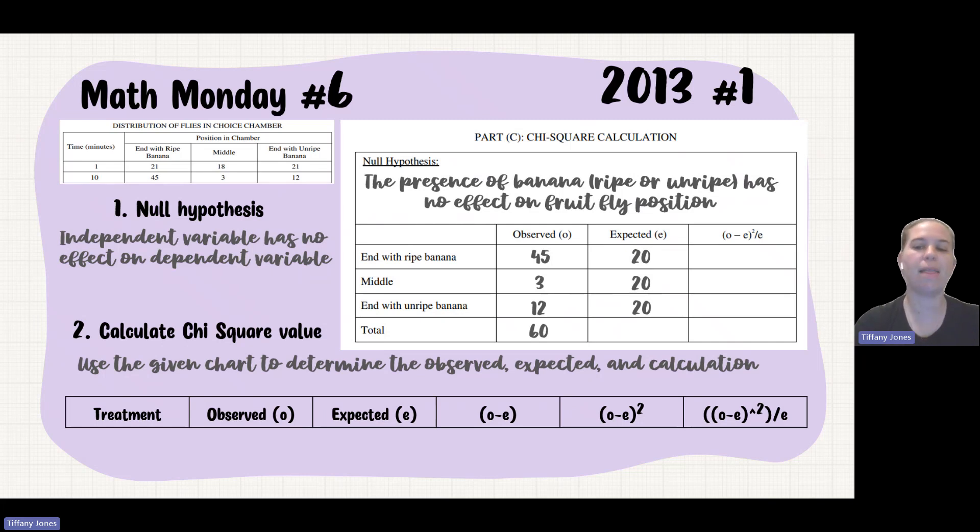Then you would do the 45 minus the 20 squared over the 20, and that's going to be how you get each of these values. So 3 minus 20 squared over 20, 12 minus 20 squared over 20, because all we're using is that chi-square formula that we used at the beginning, and that gives us 48.9, and we add those together.